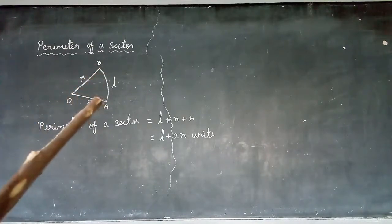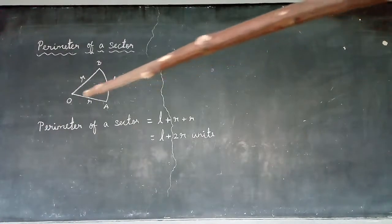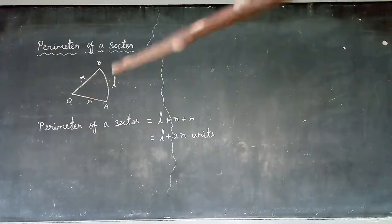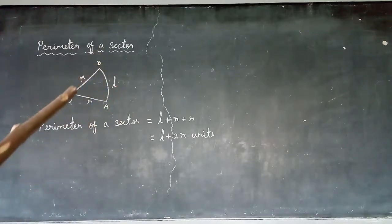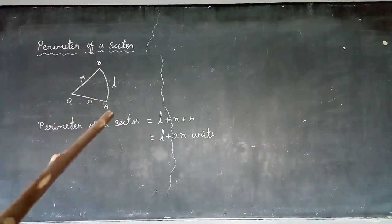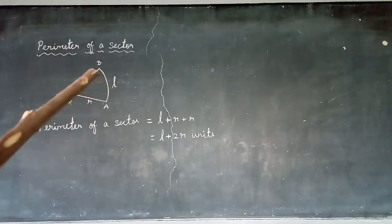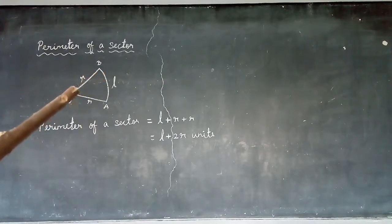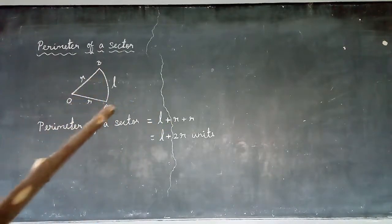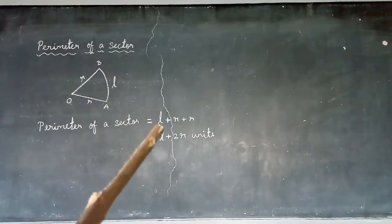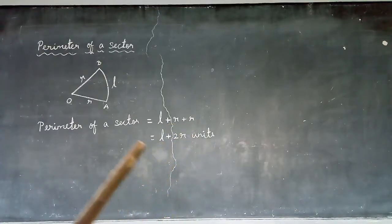The sector has a radius, an arc, and a central angle. Perimeter means the outer boundary distance. So the perimeter of a sector equals the arc length L plus one radius R plus another radius R, giving us L plus 2R. The total boundary in units is the perimeter.